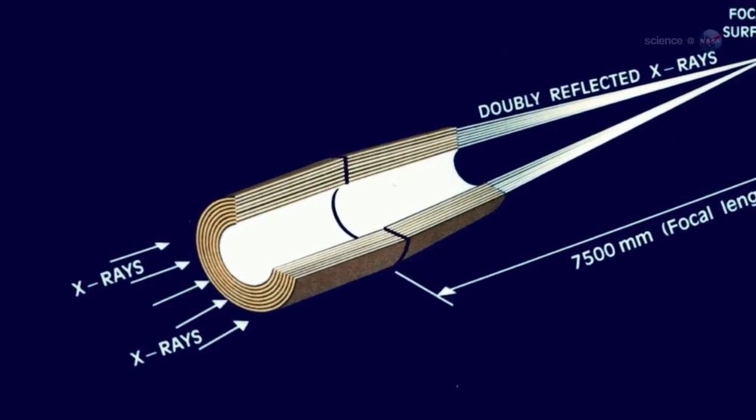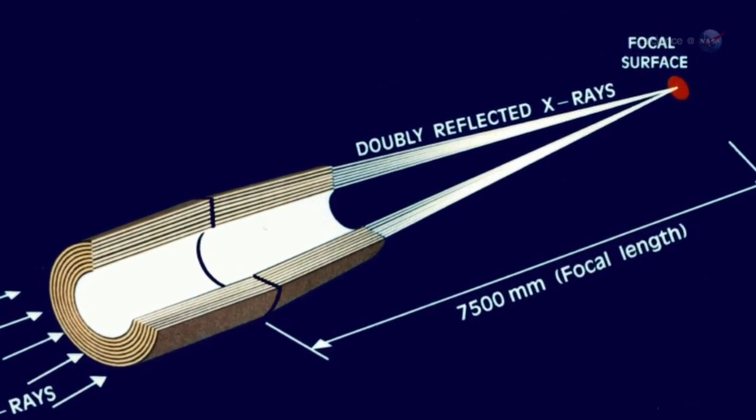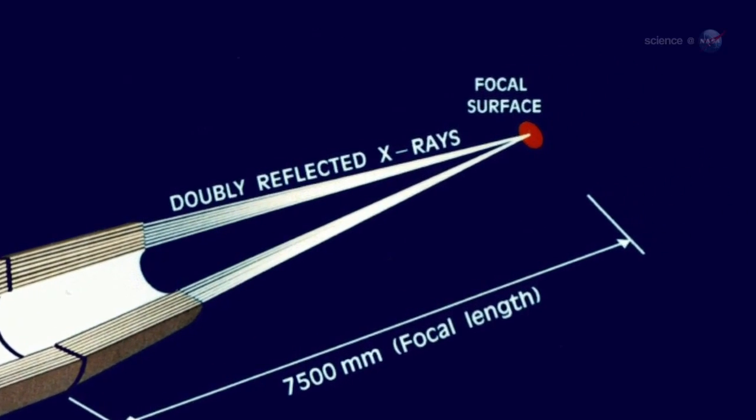They look a bit like the layers of a cylindrical onion. Incoming X-rays pass between these layers, which guide the X-rays to the focus by reflecting them off the surfaces of the shells.